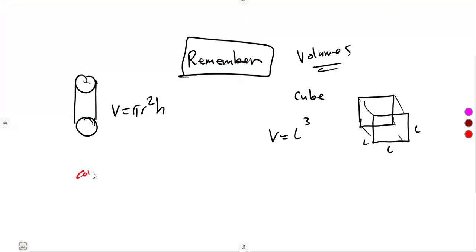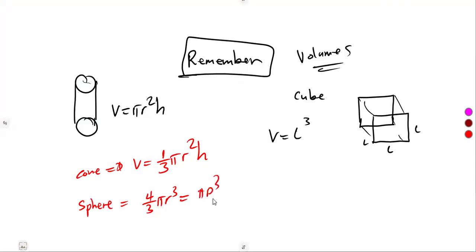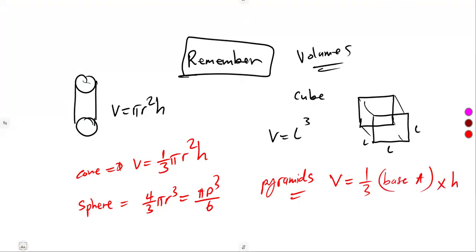We can also talk of a cone — the volume of a cone is one-third base area times height, that's one-third pi r squared h. For a sphere, the volume is four-thirds pi r cubed, which is the same as pi d cubed over 6. For pyramids, the volume is one-third of the base area times height — just like the cone, one-third base area times height. For prisms, the volume is base area times height.